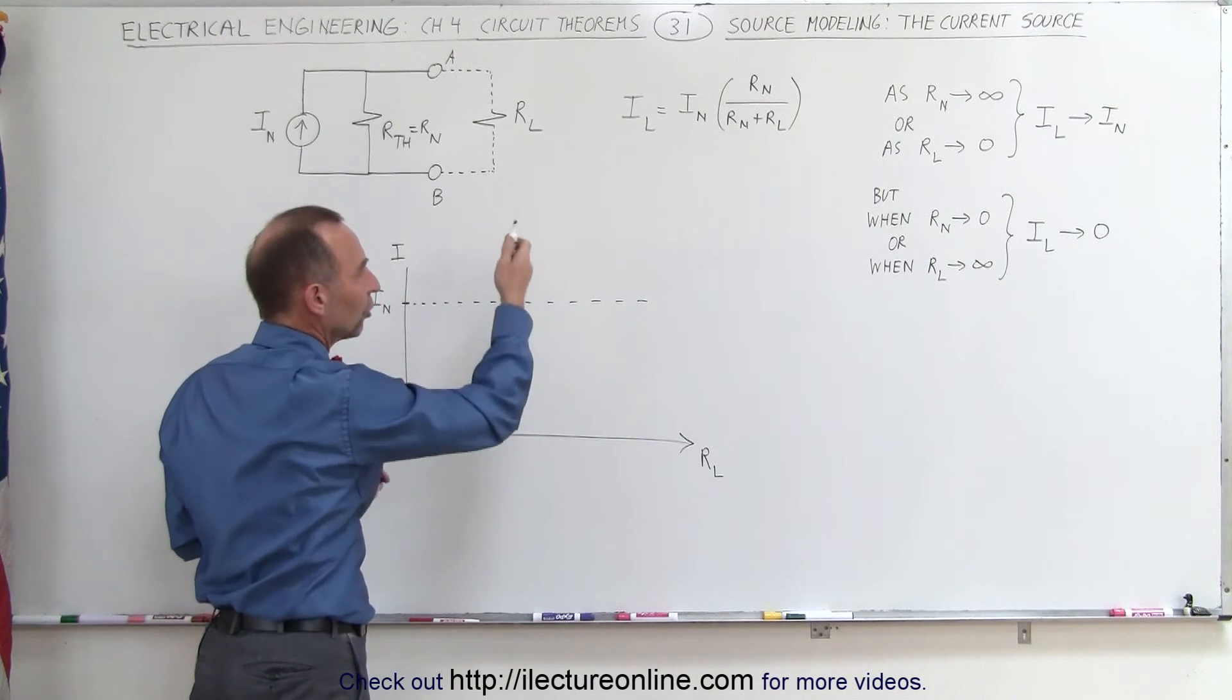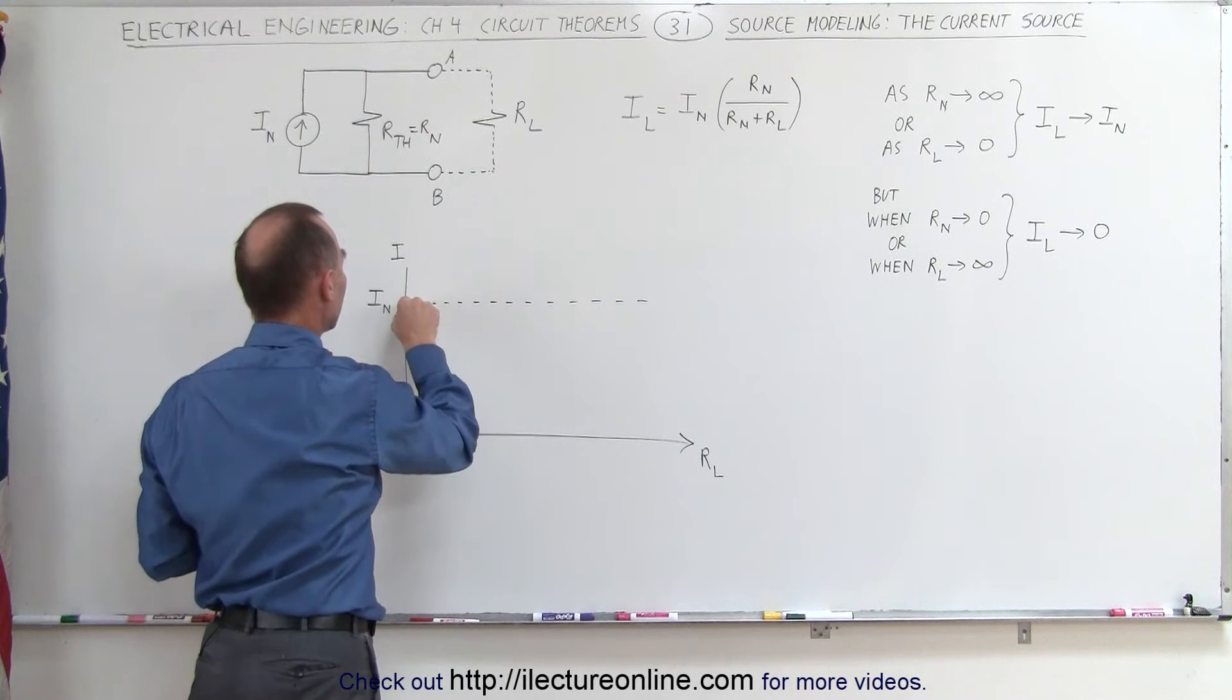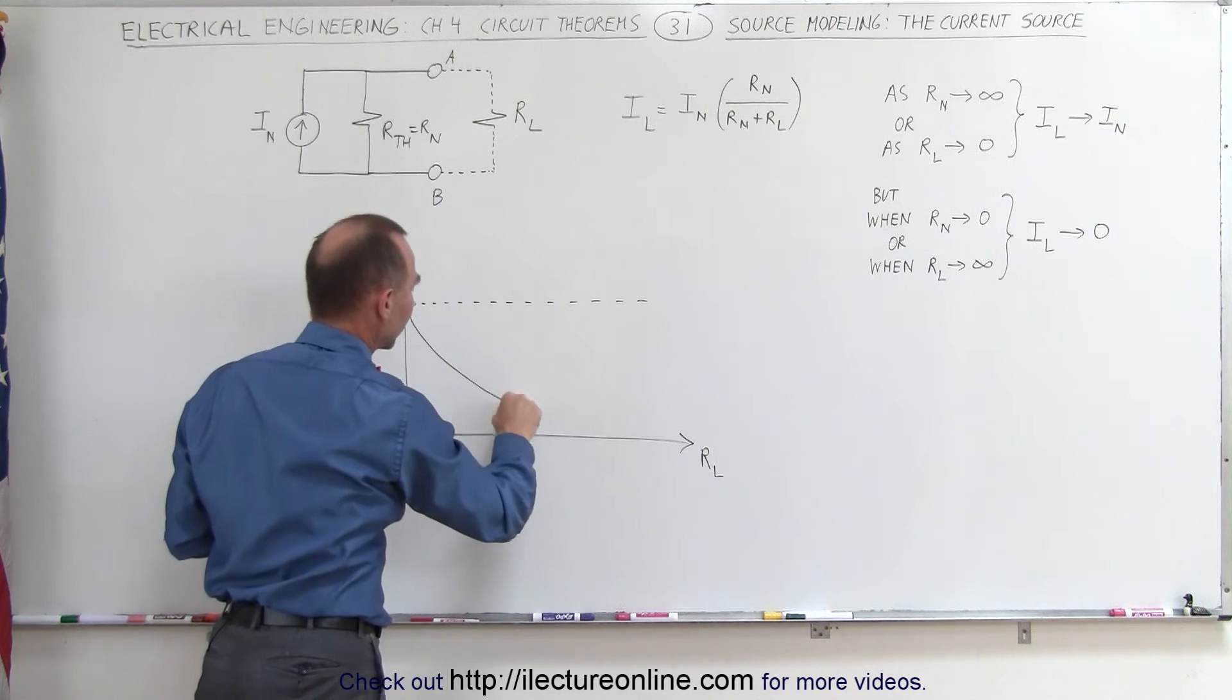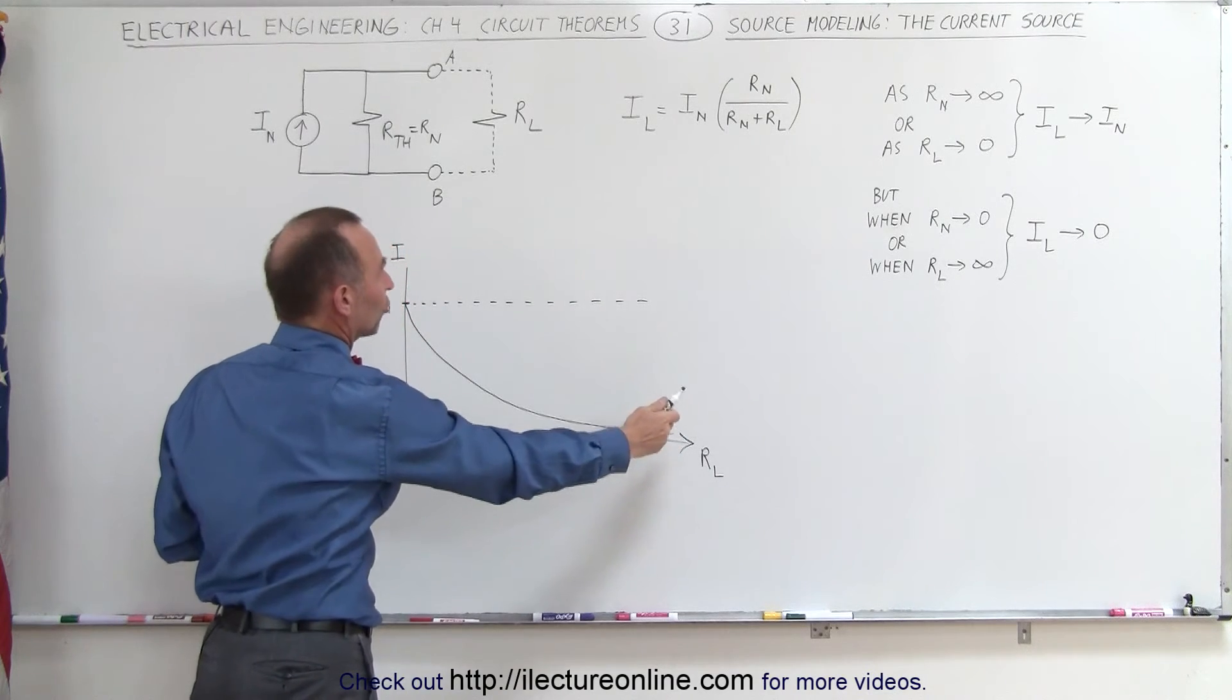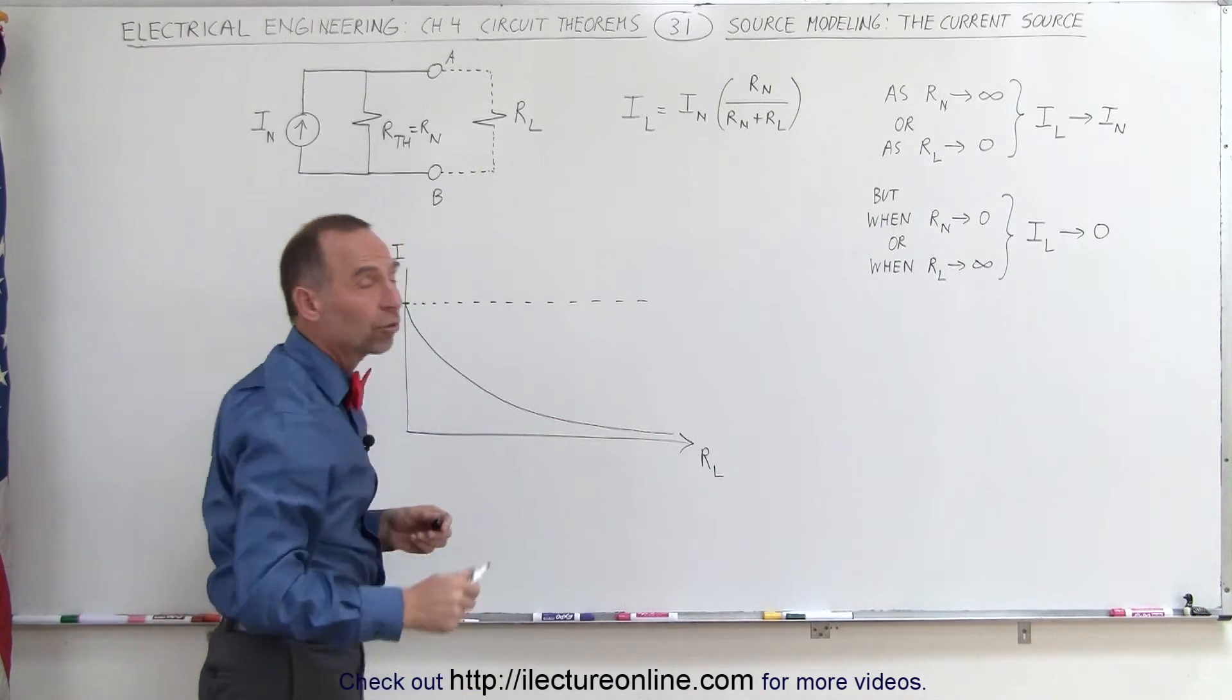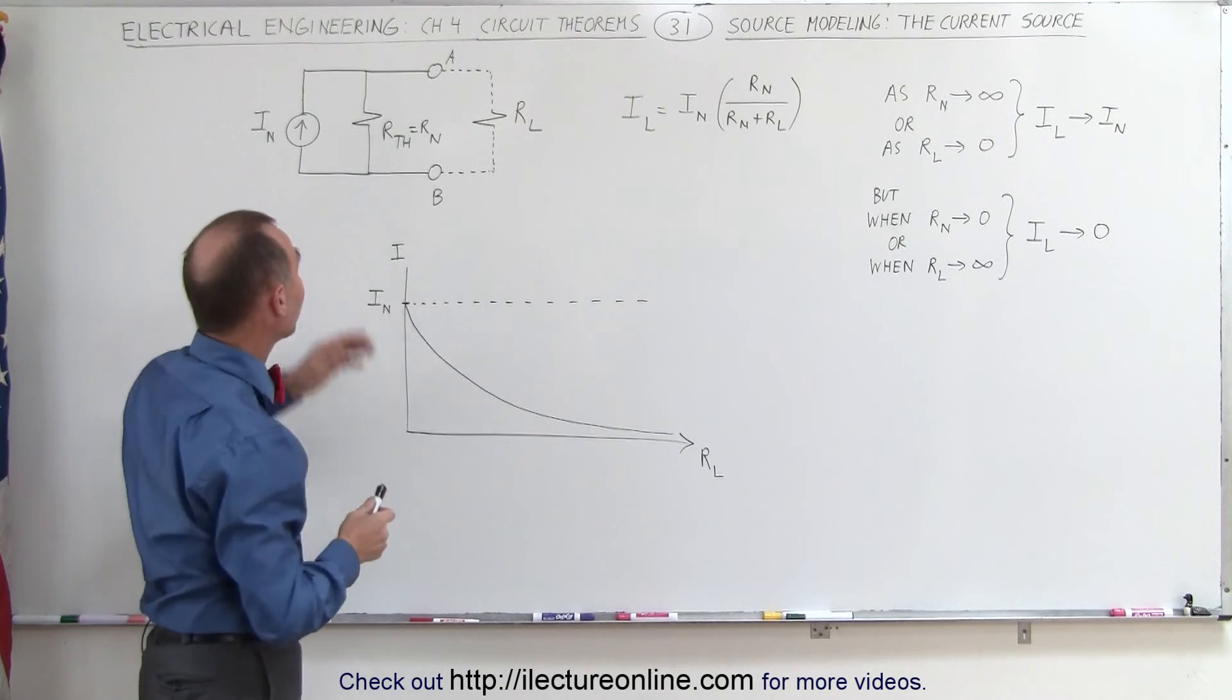But as the load resistor gets larger, the current drops in value, so the equation will be graphed like this. And you can see as the resistance gets larger and larger on the load, the current through the load will get smaller and smaller, and you would have to find a way to compensate for it if you don't want it to look like that.